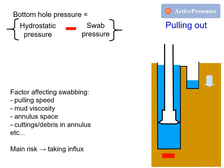Factors affecting swabbing are pulling speed, mud viscosity, annulus space, cuttings and debris in the annulus, and a few other things. The main risk if pulling out too fast is taking an influx.